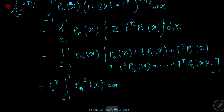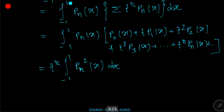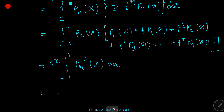All the other terms vanish since integration from minus one to plus one of Pn(x) times Pm(x) dx equals zero. Therefore, that equals t to the power n times 2 divided by (2n plus 1), which equals the right hand side.